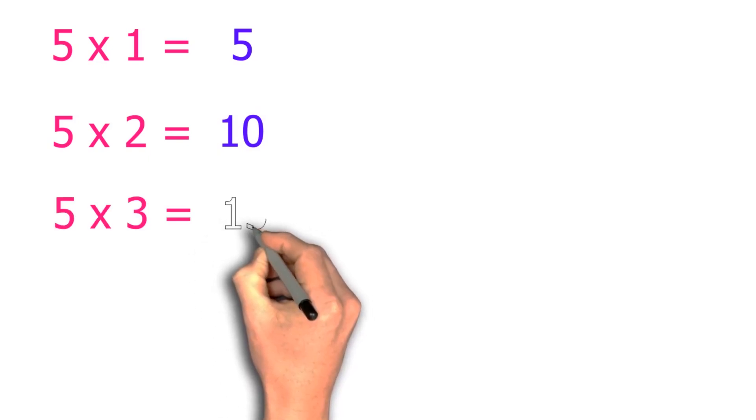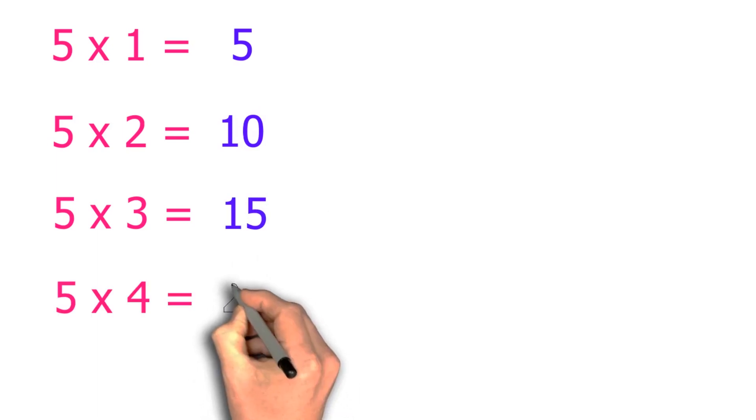Five threes are fifteen. Five fours are twenty. Five fives are twenty-five.